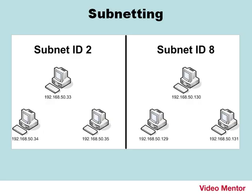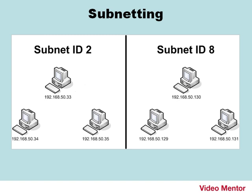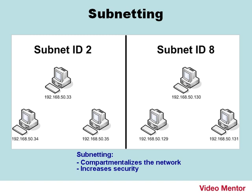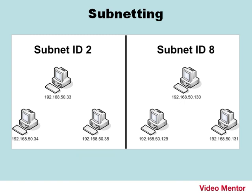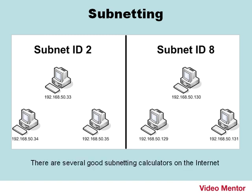As you can see in this diagram, I have two subnets: subnet ID 8, where my laptop exists at .130, and subnet ID 2, that other host I was trying to ping at .33, which does exist on this network, but I wasn't able to ping it because it's on a different subnet. A computer can ping hosts on its own subnet, but by default cannot ping hosts on another subnet — that's part of the whole reason for subnetting. It compartmentalizes your network, increases security, reduces bandwidth usage, and reduces broadcast traffic. It may become tough to work with the subnetting math, so there are several good subnetting calculators on the Internet — though you can't use these on the exam.